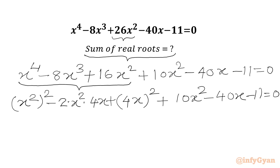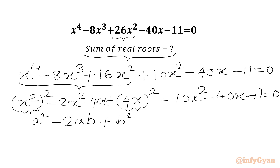Now we will consider these three terms of the LHS. We can write x⁴ as (x²)², and 16x² can be written as (4x)². Now considering x² as 'a' and 4x as 'b', in between this is -2ab, which is our algebraic formula (a - b)².